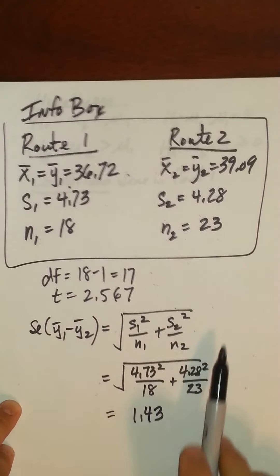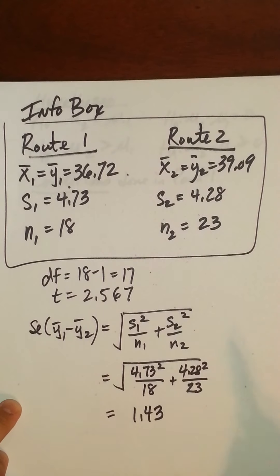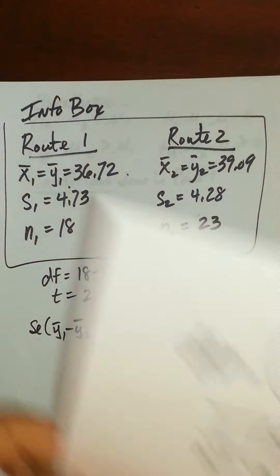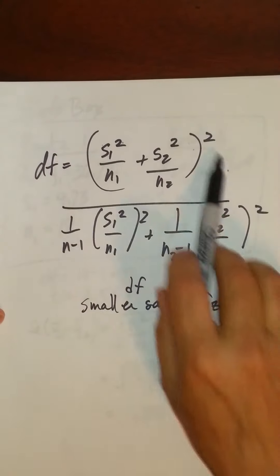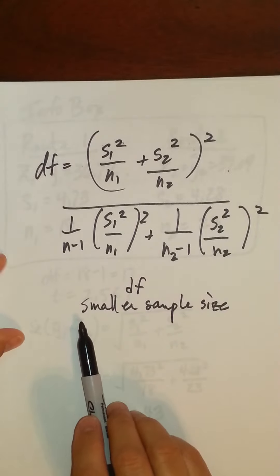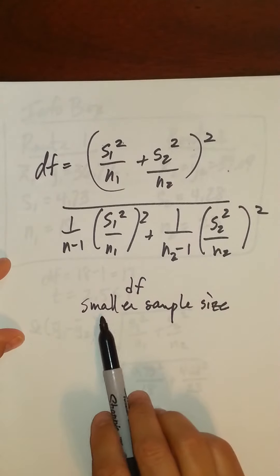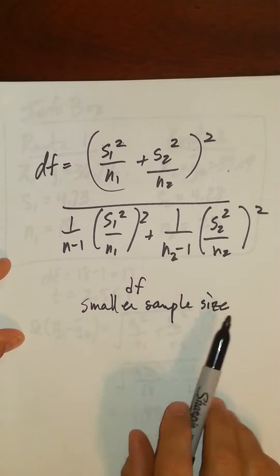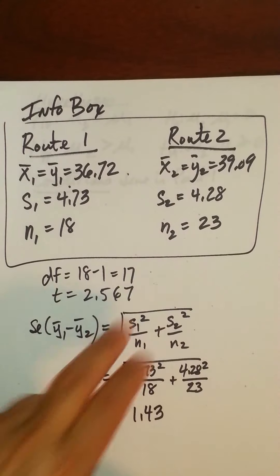So then when you do your standard error, I got 1.43. And remember, in Part 1 I also mentioned that technically the degrees of freedom, we're supposed to use this formula, but I am simplifying it. Degrees of freedom, I'm being conservative, I'm taking the degrees of freedom of the smaller sample size. So between 18 and 23, that would be 18, so our degrees of freedom would be 17.